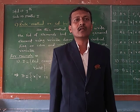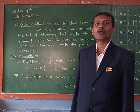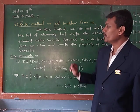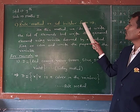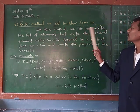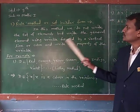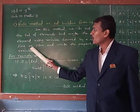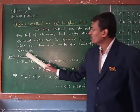Good morning students. In last lecture we have studied the listing method or roster method. Today we will see the second method, that is the rule method or set builder form. In this method we do not write the list of elements, but write the general element using the variable followed by a vertical line or colon, and write the property of the variable.